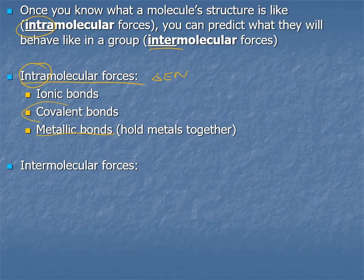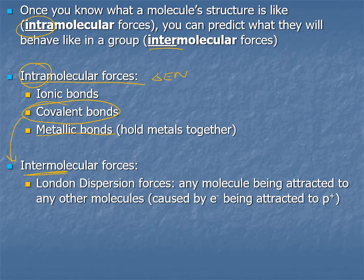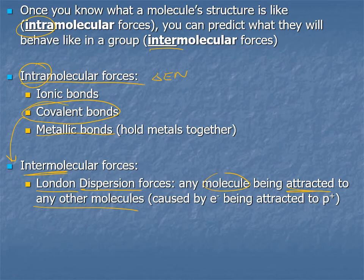Once we know we're dealing with molecules, we can look at intermolecular forces. Take two of those molecules — how are they going to interact? All molecules will have London dispersion forces, sometimes called just dispersion forces or London forces. Molecules are made of atoms that have protons and electrons, so the protons of one molecule are attracted to the electrons of another. The more protons and electrons in a molecule, the stronger this attraction.